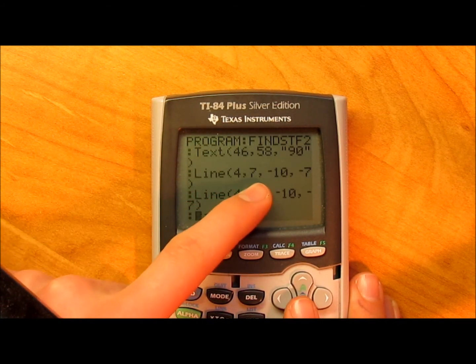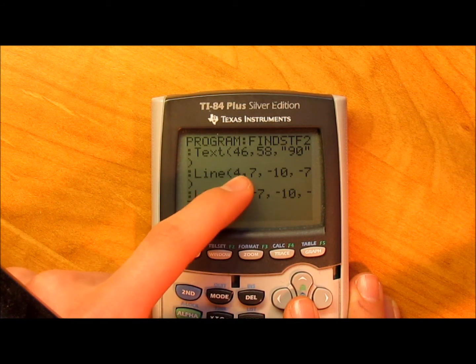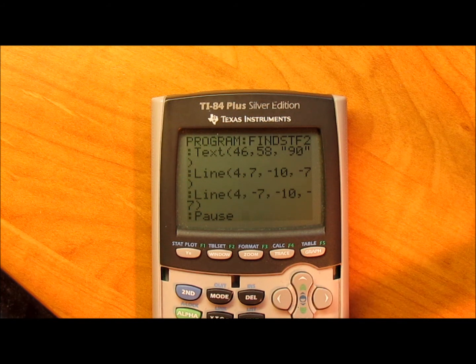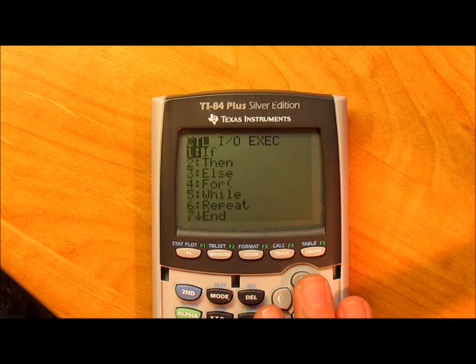Then you got the last two lines for the triangle here. So line, that one and that one. And then pause, and there should be a return here. I accidentally deleted it.